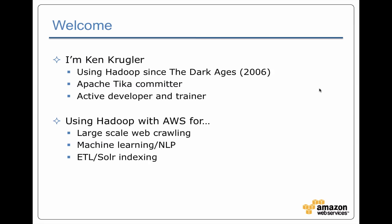These solutions typically involve things like large-scale web crawling and machine learning. Often the outcome of this extract, transform, and load workflow is a Solr index. For the past two and a half years I've almost exclusively been using Amazon Web Services, both EC2 and Elastic MapReduce, to create these Hadoop solutions.